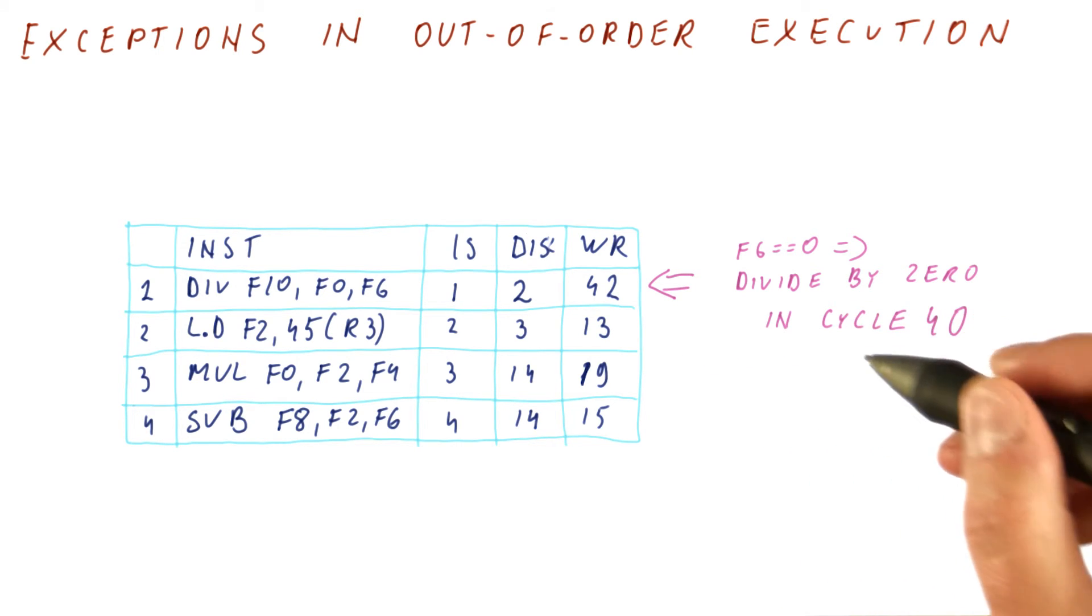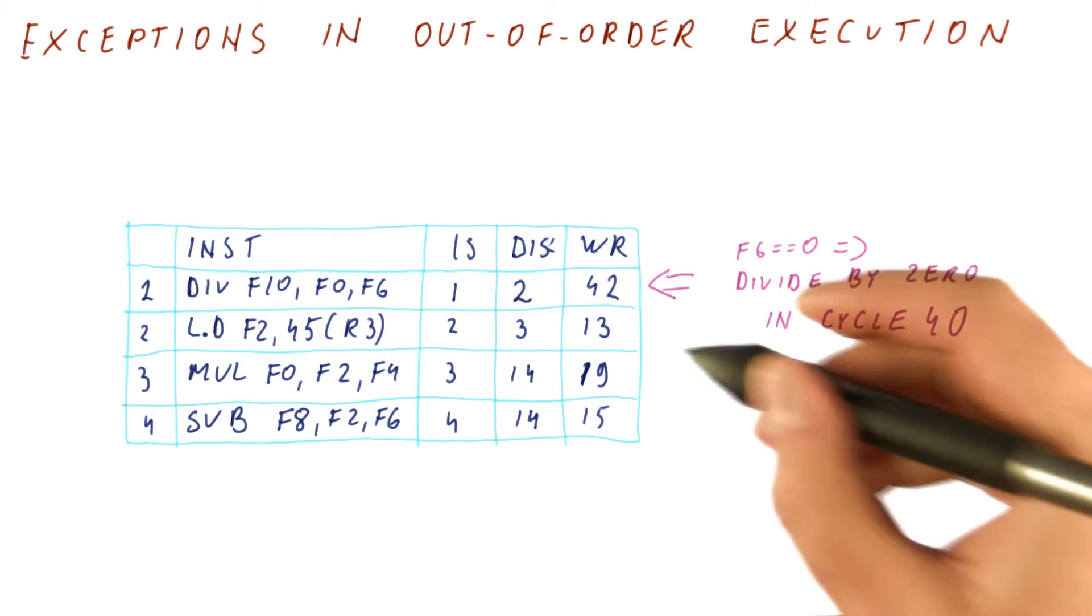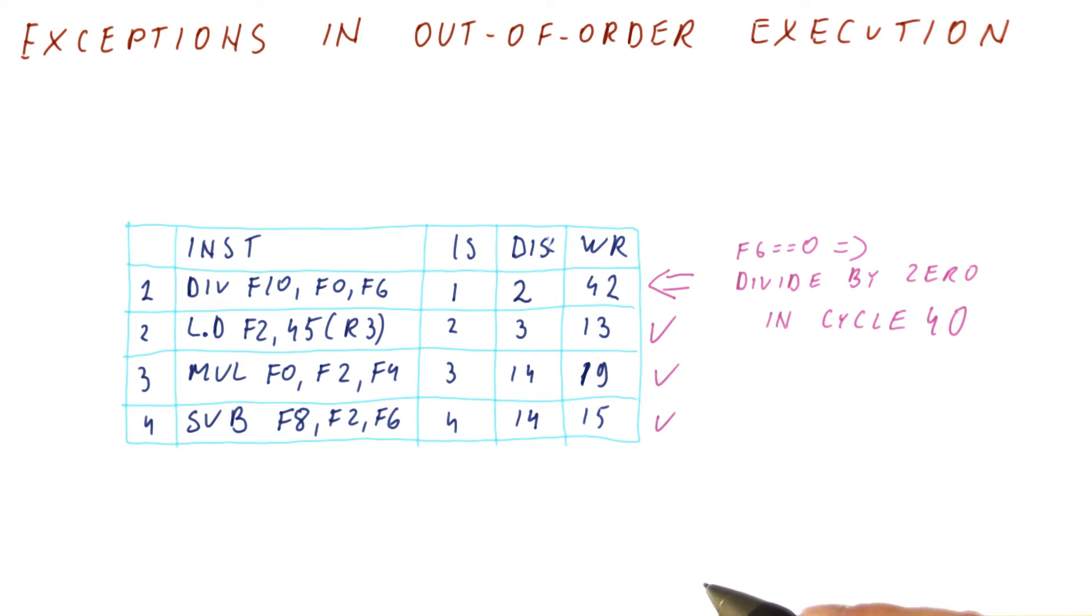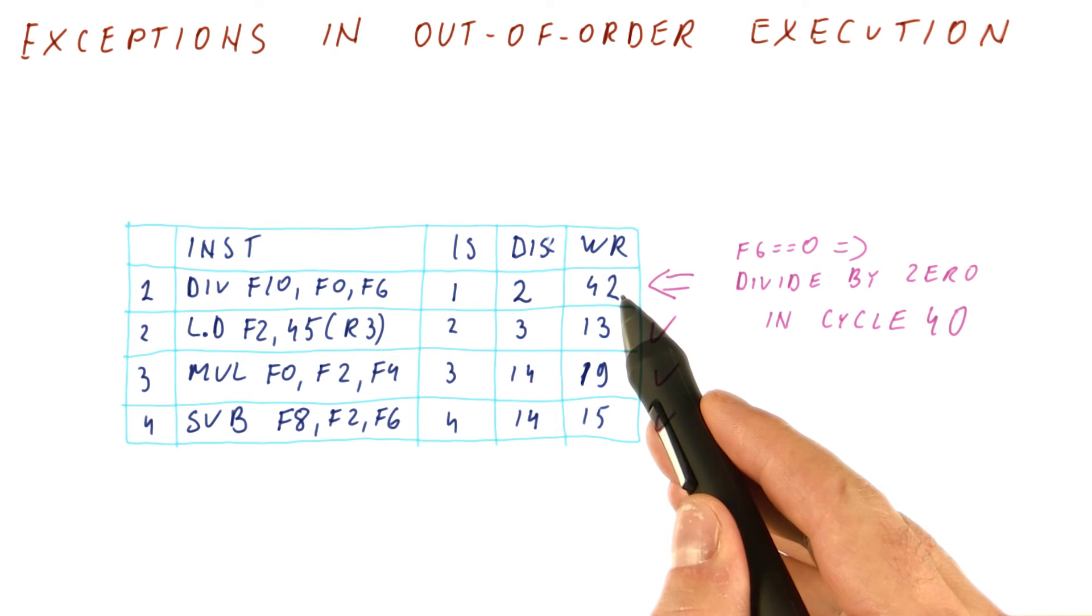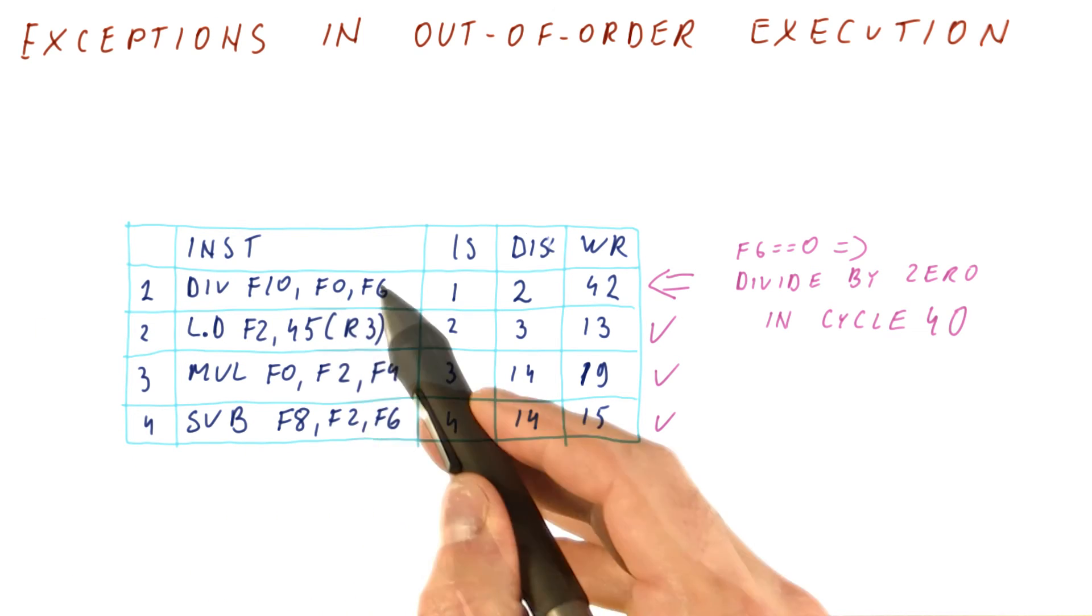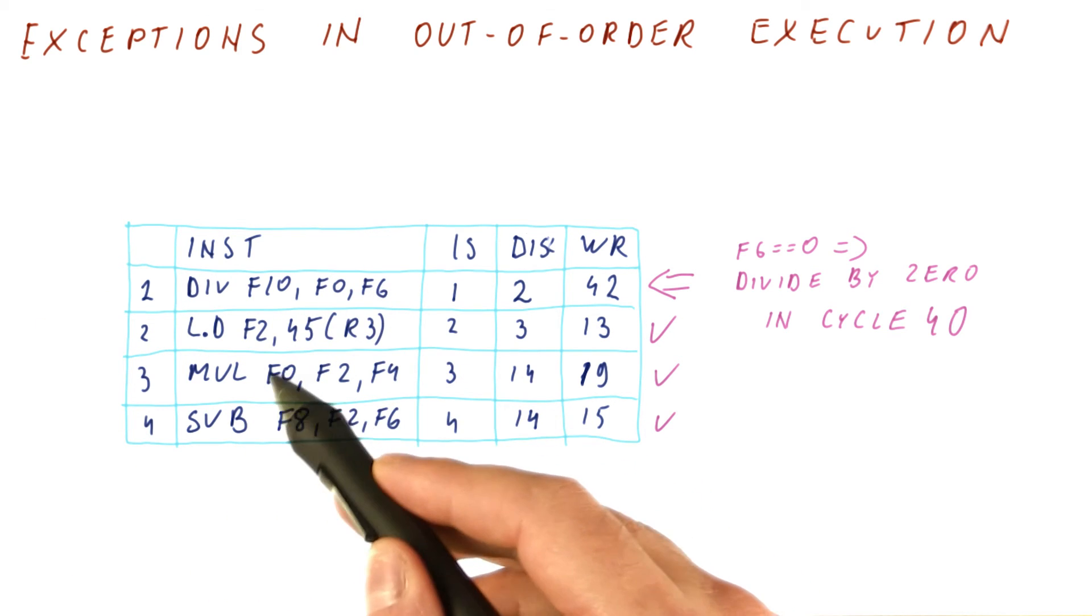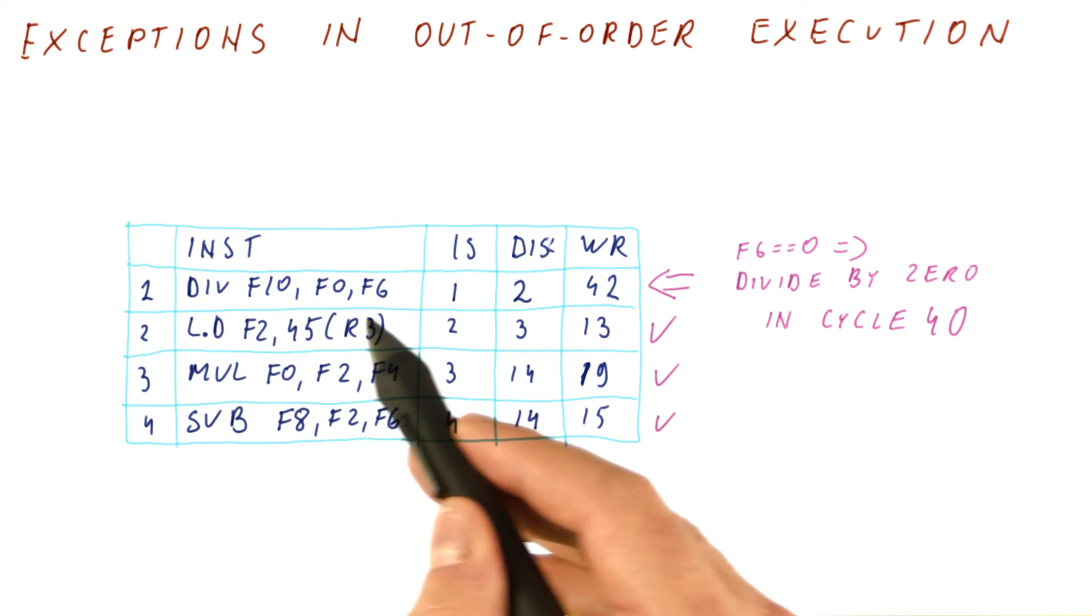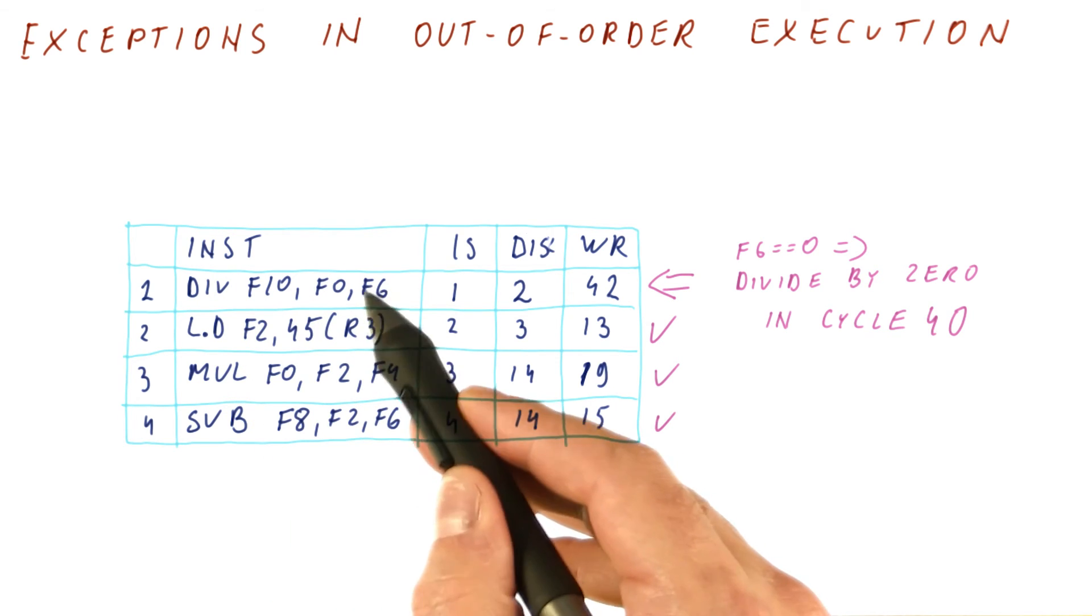However, what really happens is in cycle 40, we have already executed these instructions and written their results. This is the only one that really hasn't been done, and so F10 hasn't been updated. If we now go to the exception handler and then come back, this instruction will use the F0 produced by this instruction. So this instruction can now never get a correct result anymore, even if we maybe fix F6.